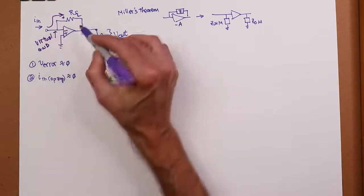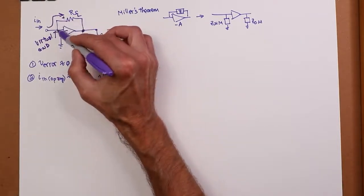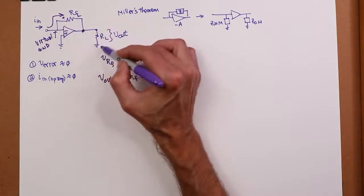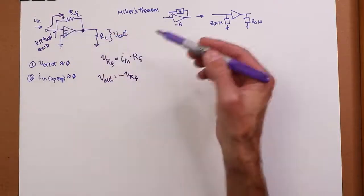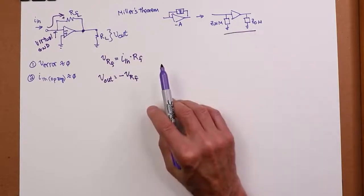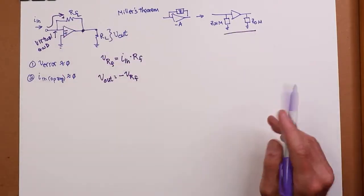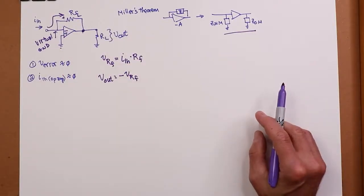Look at the polarities over here, right? This is minus, that's plus. That's a virtual ground. This is a real ground. It's not immediately apparent, but through Miller's Theorem, we can see that RF effectively is in parallel with RL. However, the polarity is flipped upside down.